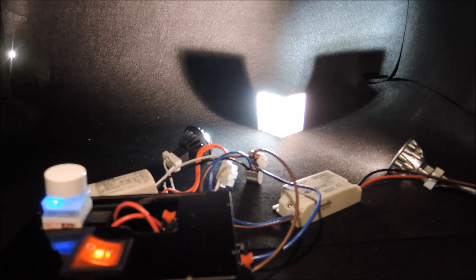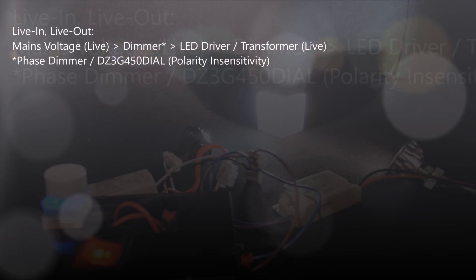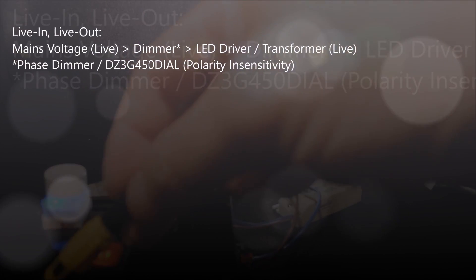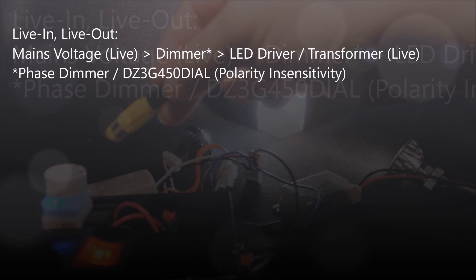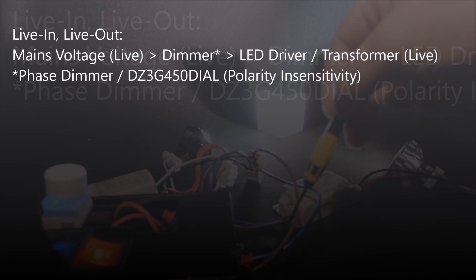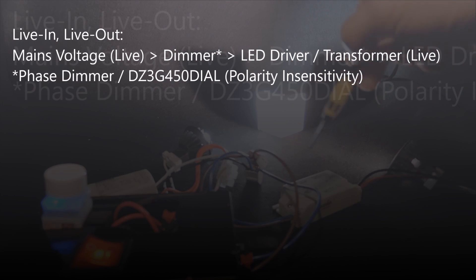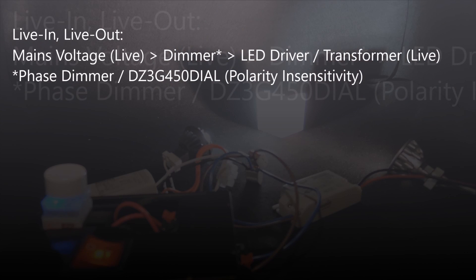In both cases, on the AC side, you'll have the mains voltage connected to our phase dimmer, the DZ3G450VAL, before connecting the live input to either the transformer or the LED driver.